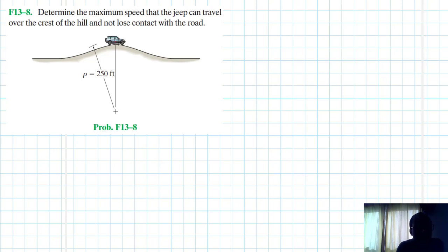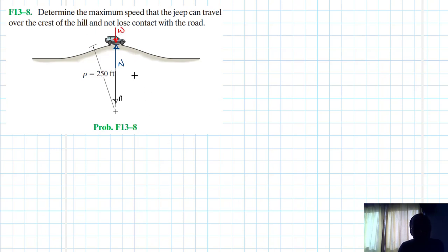We have the weight acting through the center of gravity and the normal force. This here is our n-coordinate. This is our normal force, this is our weight, and our acceleration — we are going to take this direction, and we'll call it m times a_n.